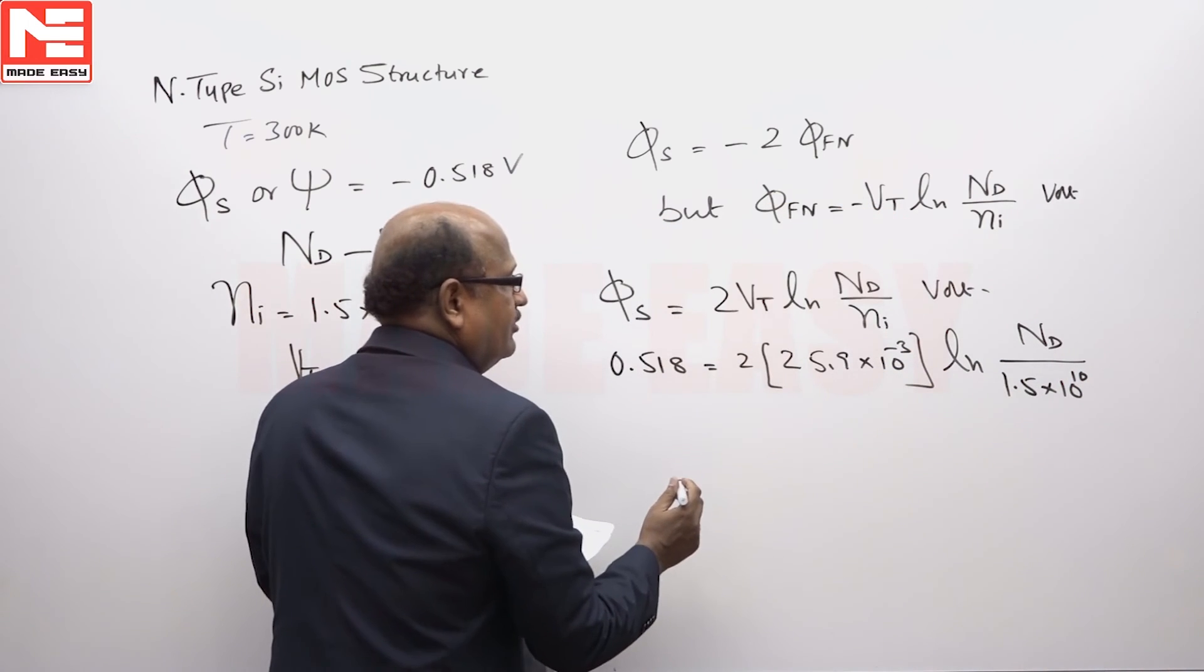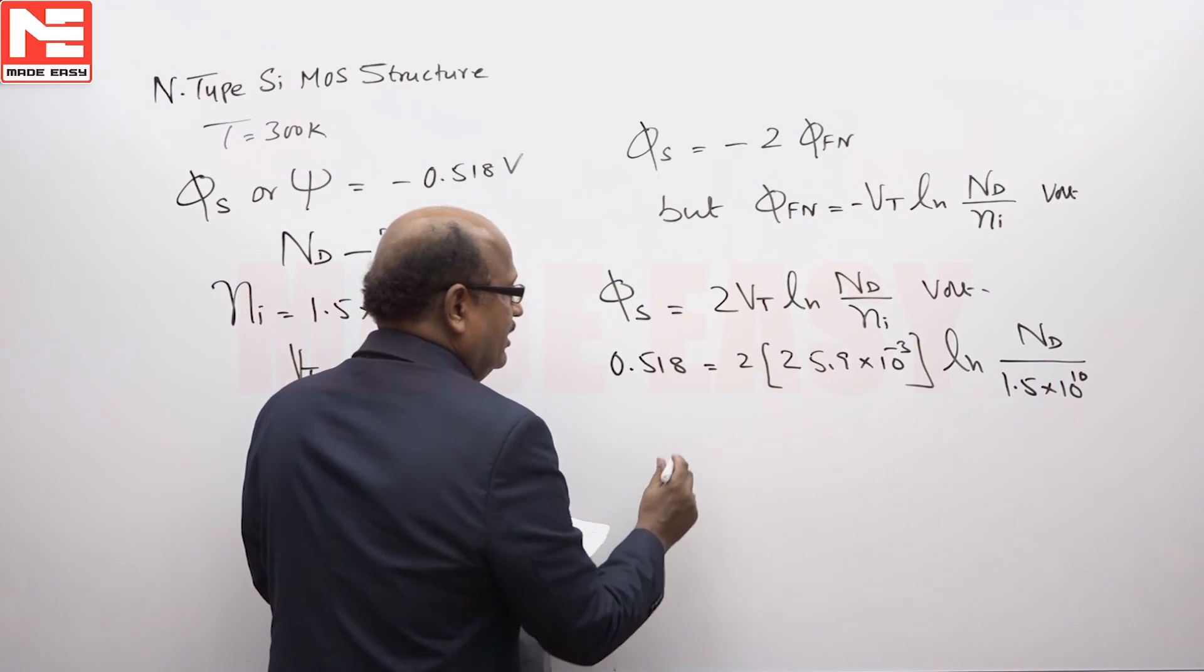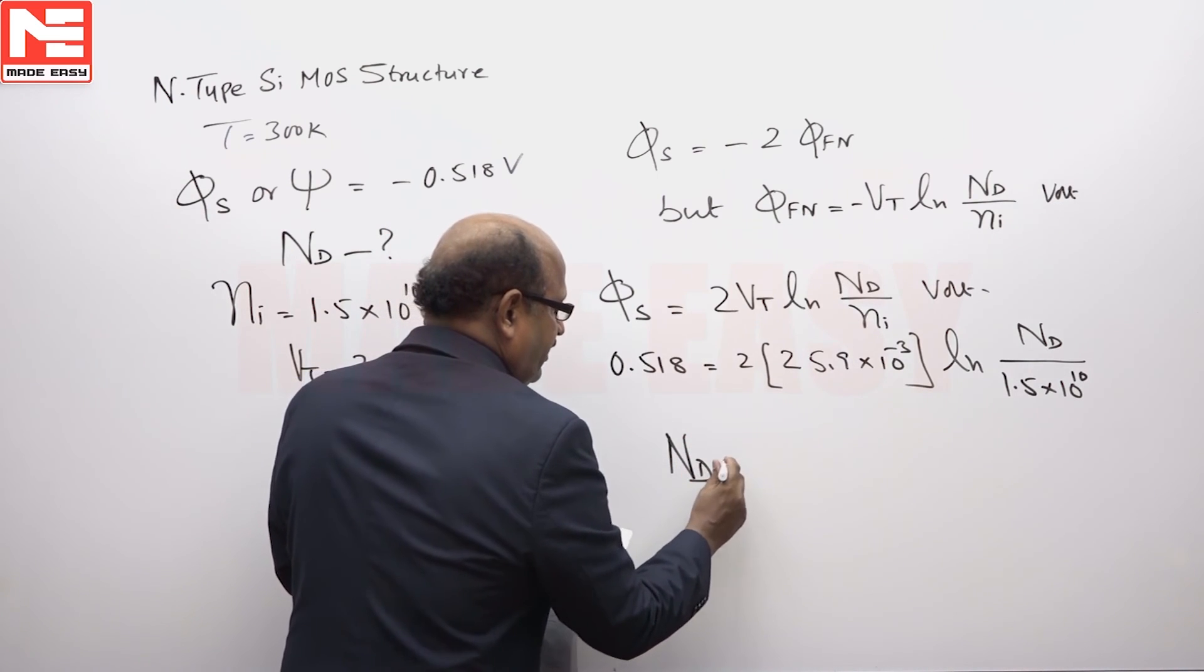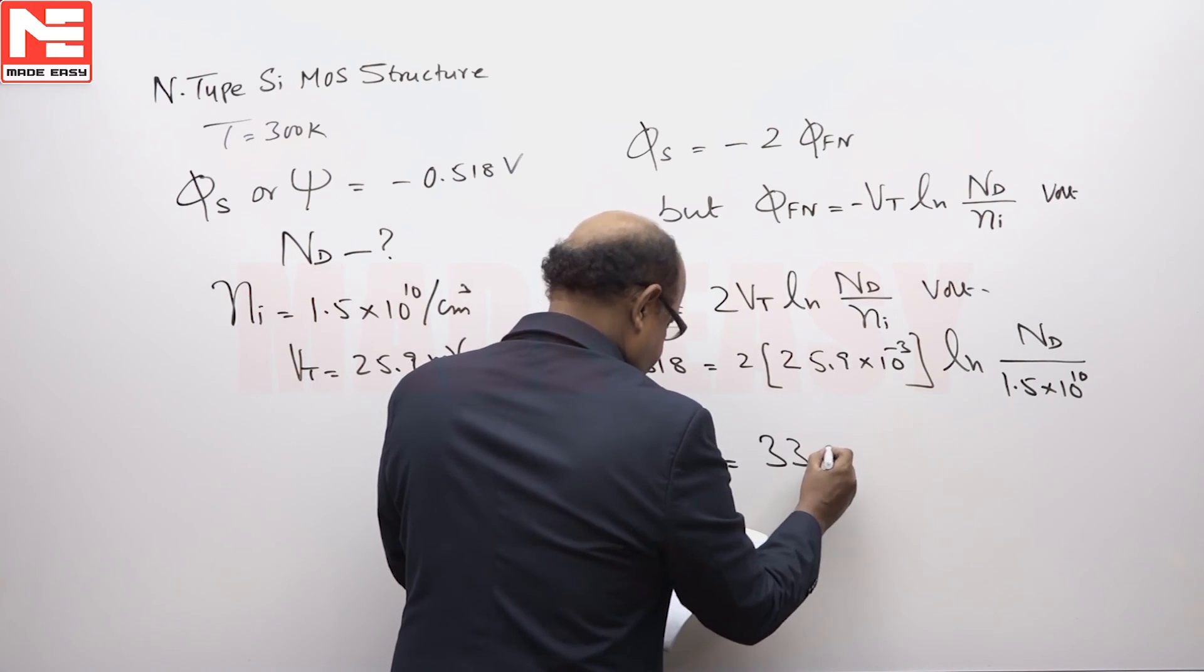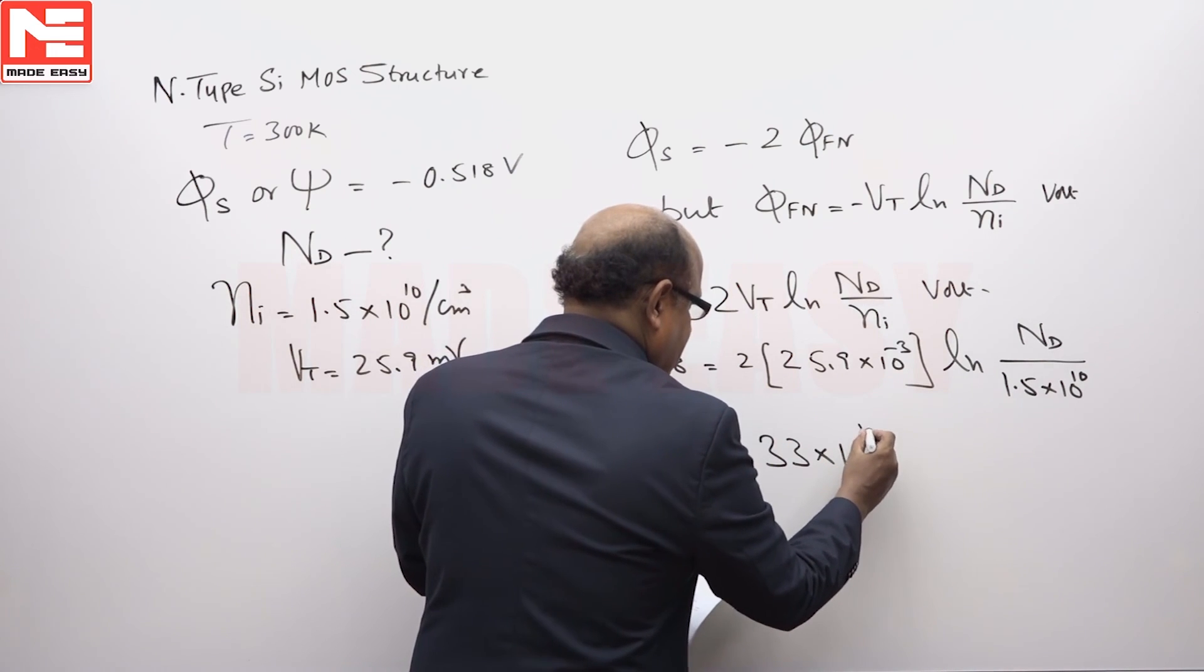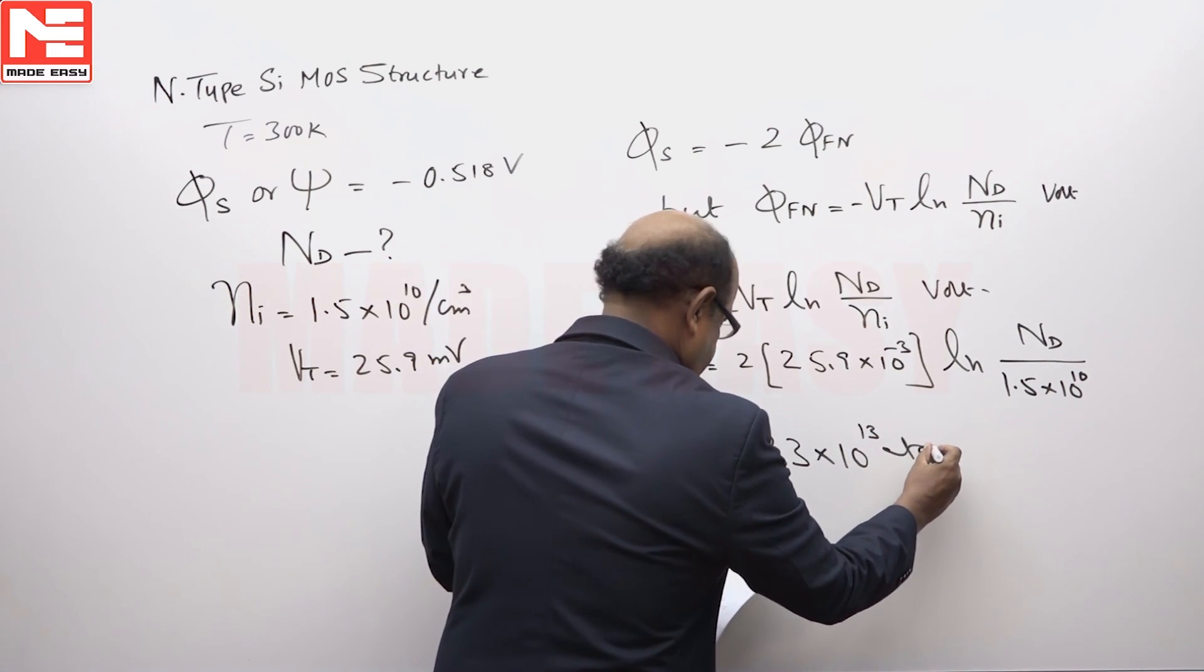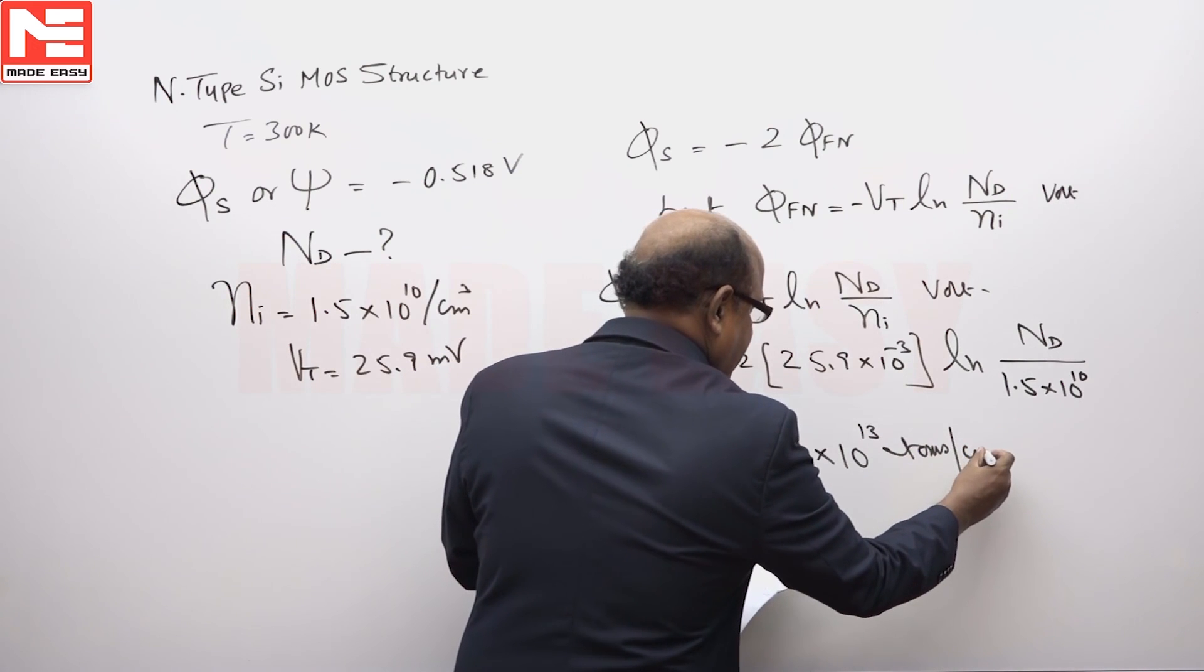On solving this value, donor concentration N_d equals 33×10^13 atoms per centimeter cubed.